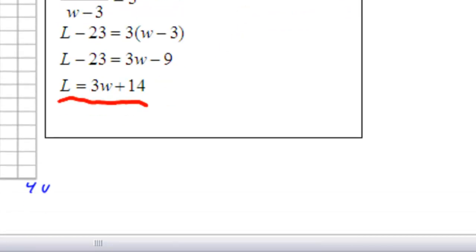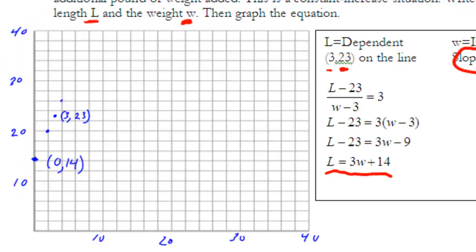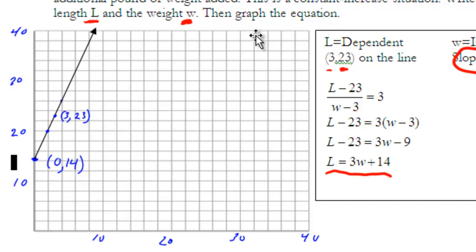To graph the equation, I plot the y-intercept of 14, then for every one unit I go over, I go up 3. I also know the point (3, 23) is on the line, so I plot that as well. When graphing, I didn't put an arrow on the left side because we're only working in the first quadrant — we won't be looking at anything to the left of the y-axis. That's the graph for this example.